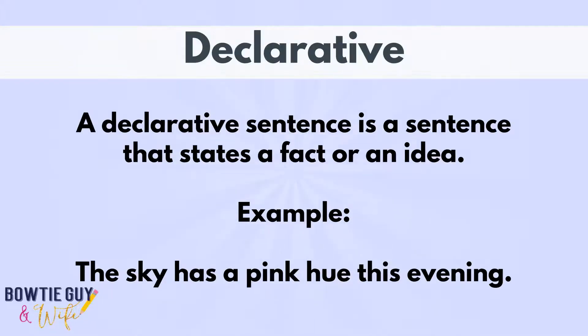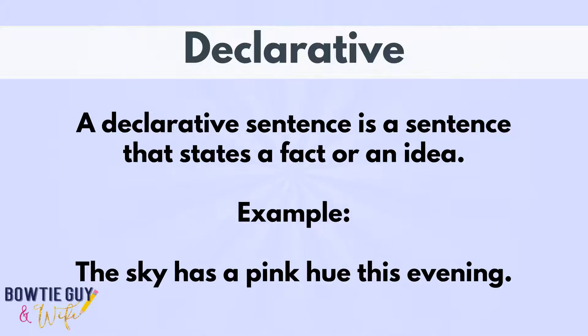A declarative sentence is a sentence that states a fact or an idea. Here's an example: The sky has a pink hue this evening.